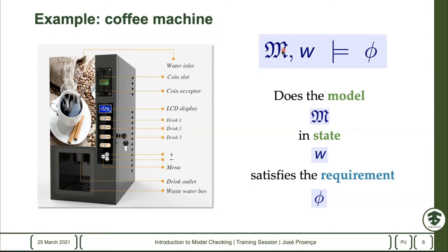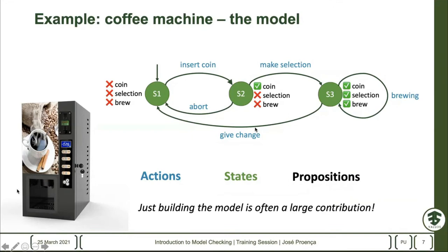In this context we usually write this to capture the model checking process. We describe some kind of model M, describe some kind of state, and ask ourselves — or ask the tools — does this model in this state satisfy or entail the requirement specified by this formula? This is the mathematical notation, and it basically means we grab a requirement and a more complex system, typically a state machine, and try to check using brute force or something smarter if we can say yes or no to this property.